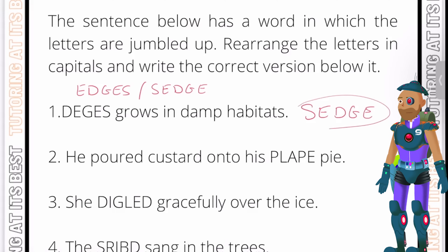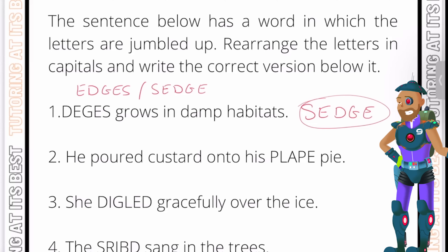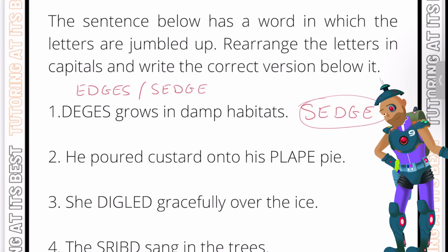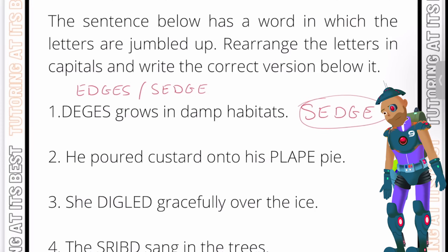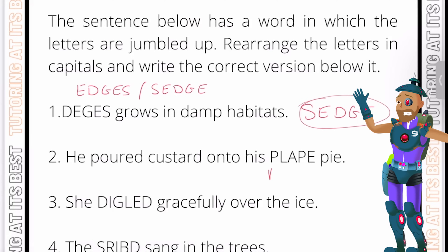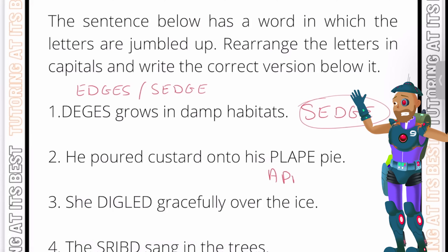Question two: he poured custard onto his something pie. The context here is food — we're talking about a pie, but what type of pie? If you rearrange the letters, we get 'apple'. And there we are.